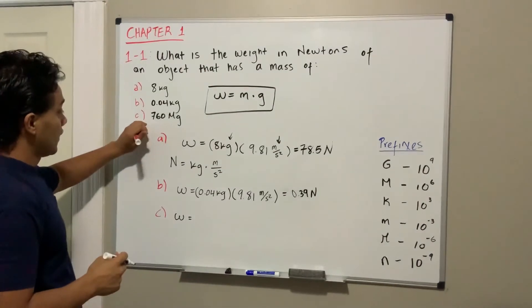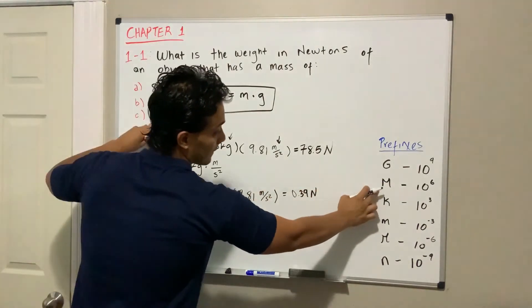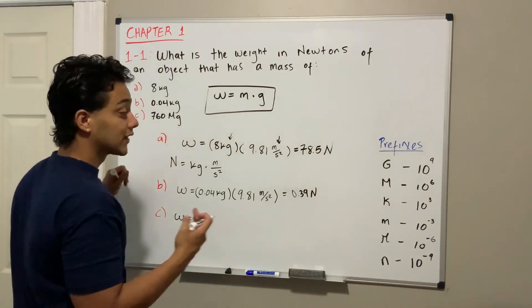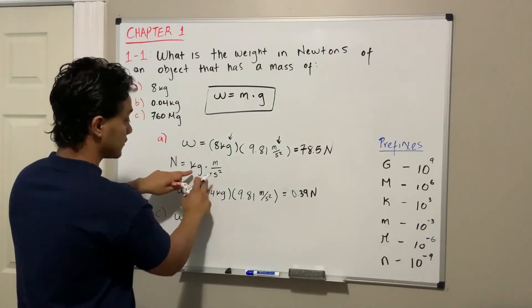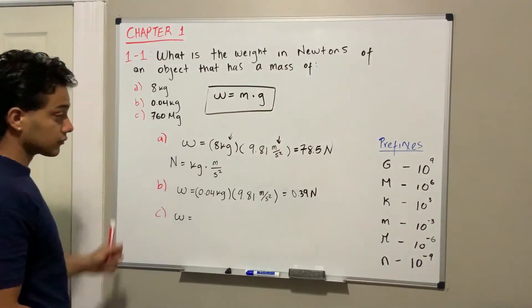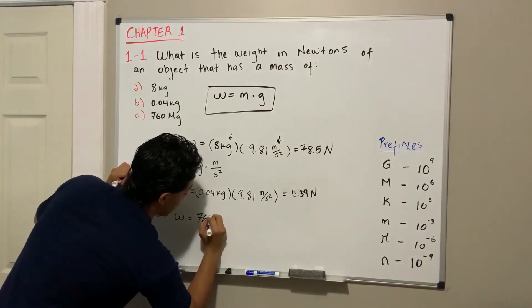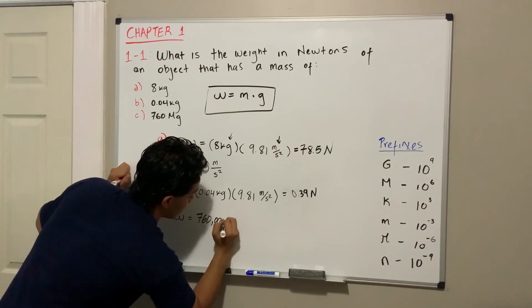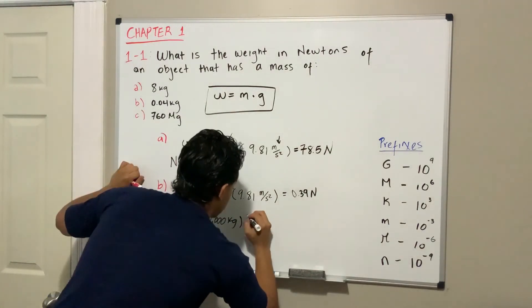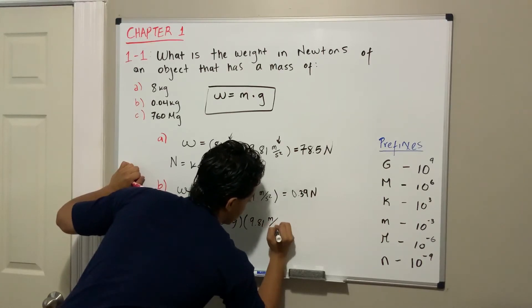Last, C is going to be W equals 760 mega. If we look at our table, mega means times 10 to the 6. So if I want to convert it into kilo in order to have kilograms multiplied by meter over second squared to get newtons (the unit I want), we can convert this into 760,000 kilograms. After that, we're going to multiply it by 9.81 meters per second squared.